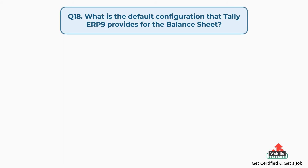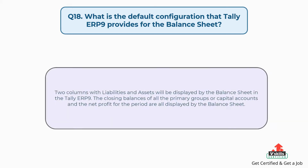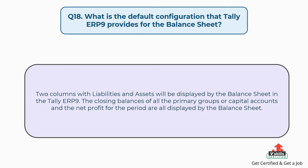Question number eighteen: what is the default configuration that Tally ERP9 provides for the balance sheet? Two columns with liabilities and assets will be displayed by the balance sheet in Tally ERP9. The closing balances of all the primary groups or capital accounts and the net profit for the period are all displayed by the balance sheet.